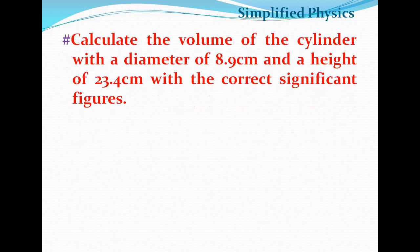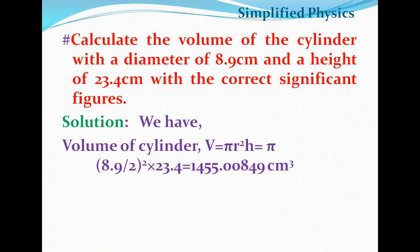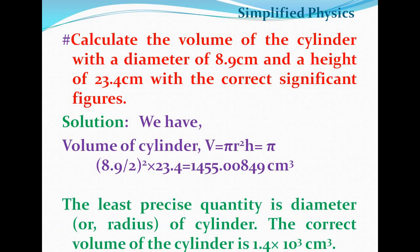Here is an example: calculate the volume of a cylinder with diameter 8.9 centimeter and height 23.4 centimeter using the correct significant figures. Using V equals pi r squared h, with pi equals 3.14, radius equals 8.9 divided by 2, and height 23.4, the calculated value is 1455.00894 cubic centimeters. The least precise term is 8.9, which has two significant figures, so the final answer is written as 1.4 times 10 to the power 3 cubic centimeters.